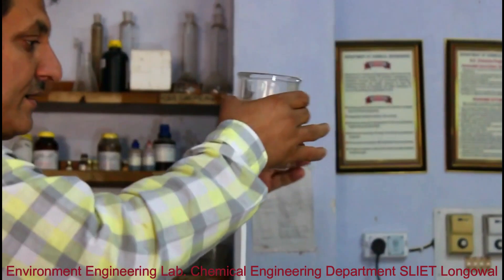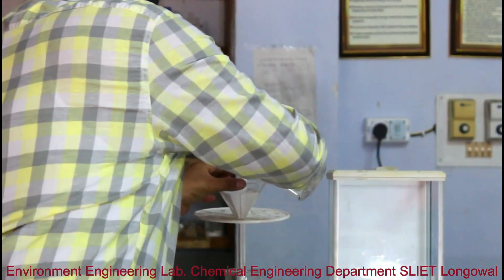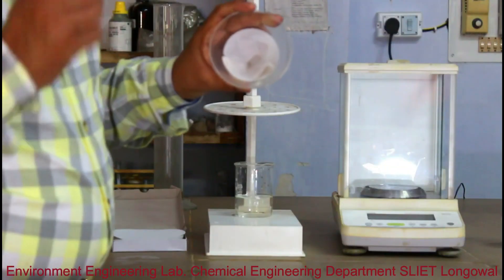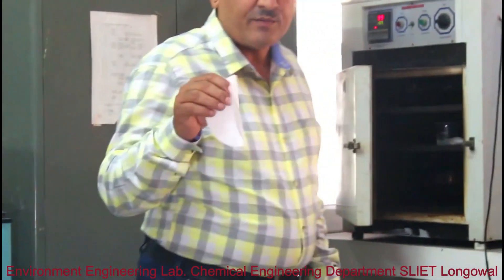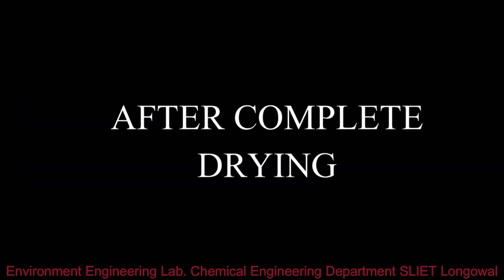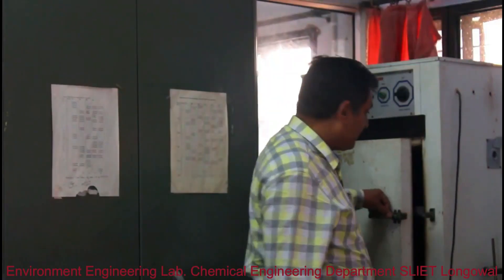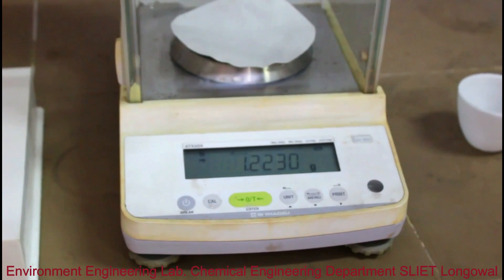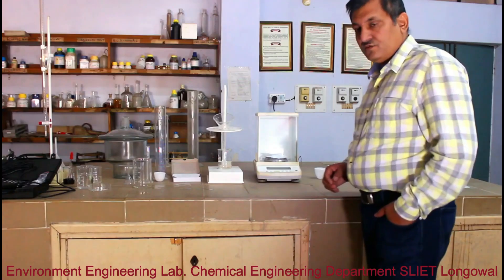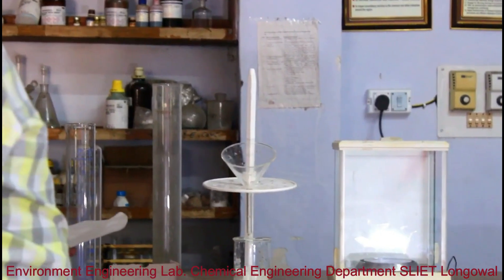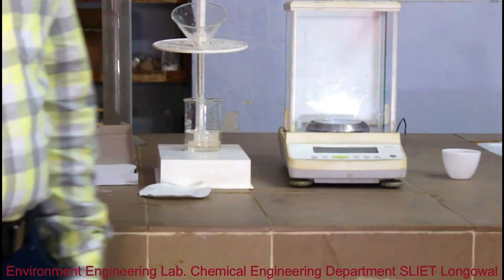Filter the sample inside this filter paper. Now put this filter paper in our oven at a temperature of 105 degrees centigrade. After drying, take out this filter paper and weigh it again. After drying, the weight of this filter paper is 1.2231 grams. The initial weight subtracted from this final weight gives you your suspended solids.